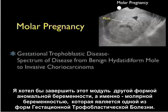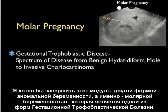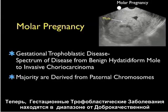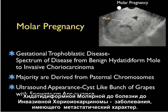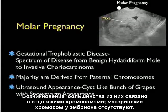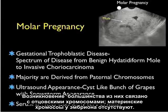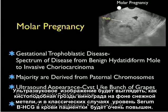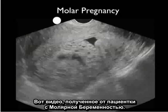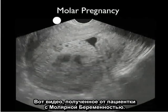I'd like to conclude this module with another form of abnormal pregnancy — molar pregnancy — which is a form of gestational trophoblastic disease. Gestational trophoblastic disease ranges from a benign hydatidiform mole to invasive choriocarcinoma, a form of metastatic disease. The majority are derived from paternal chromosomes with no maternal chromosomes in the embryo. The ultrasound appearance will be a cyst-like bunch of grapes with a snowstorm type appearance, and classically the serum beta-HCG will be very elevated.